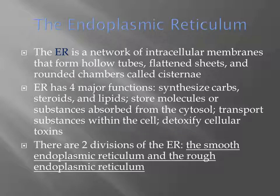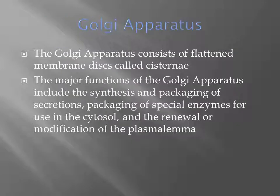The endoplasmic reticulum is a network of intracellular membranes forming hollow tubes, flattened sheets, and rounded chambers called cisternae. The ER has four major functions: to synthesize carbohydrates, steroids, and lipids; to store molecules absorbed from the cytosol; to transport substances within the cell; and to detoxify cellular toxins. There are two major divisions: smooth ER and rough ER. The Golgi apparatus consists of flattened membrane discs called cisternae, and its functions include synthesis and packaging of secretions, packaging of special enzymes for use in the cytosol, and renewal or modification of the plasmalemma.